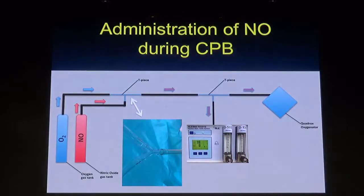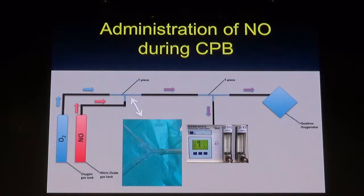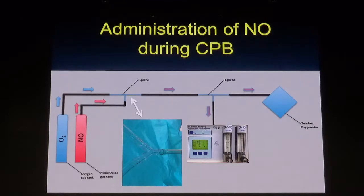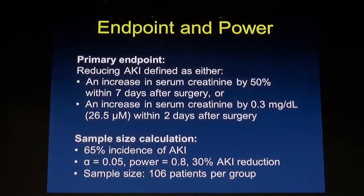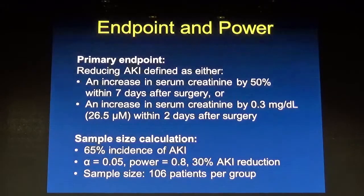This shows how we administered nitric oxide through the cardiopulmonary bypass: in the sweep gas we added pure nitric oxide to the mixture of oxygen and nitrogen, and when the patient was disconnected from cardiopulmonary bypass we gave it through the ventilator.